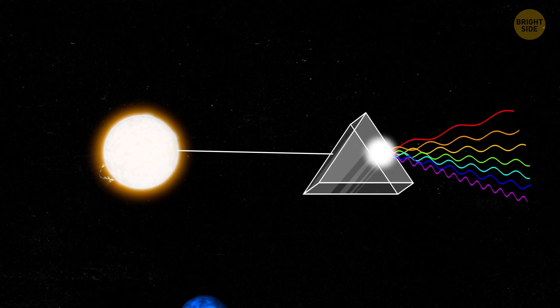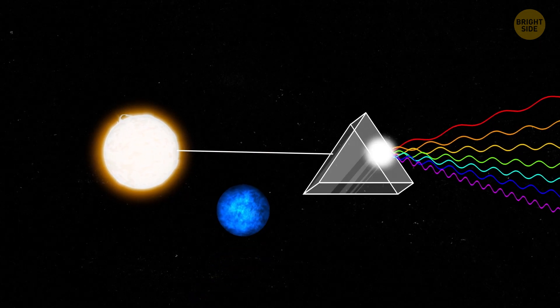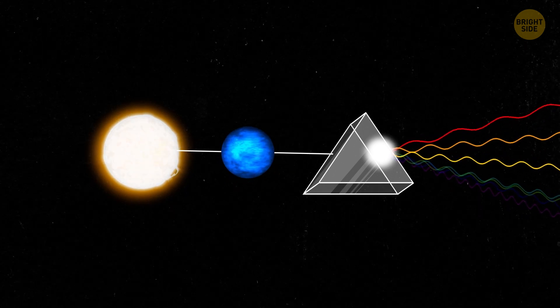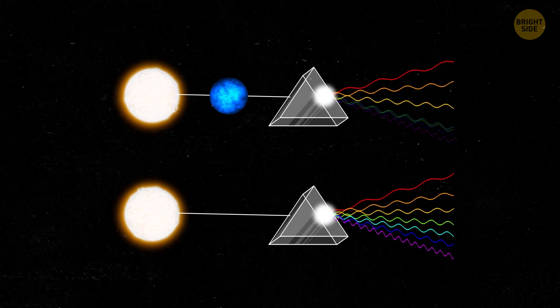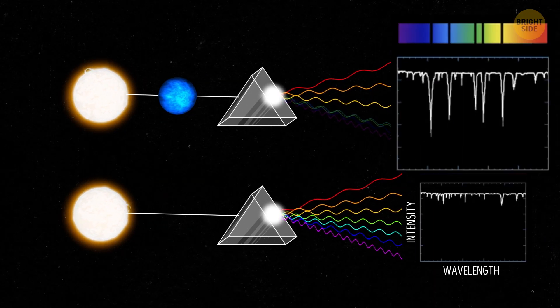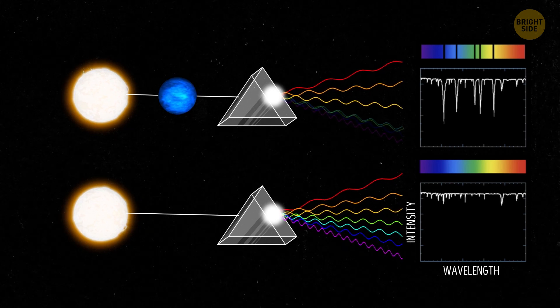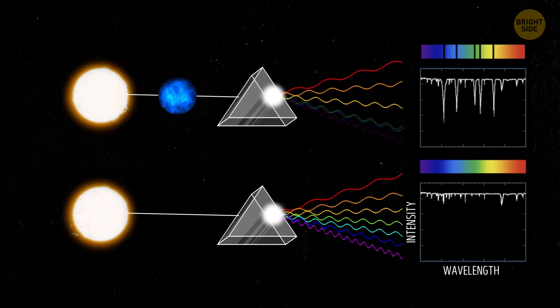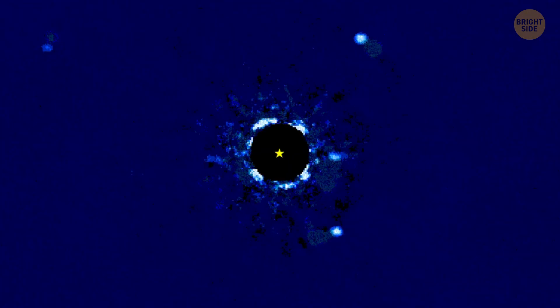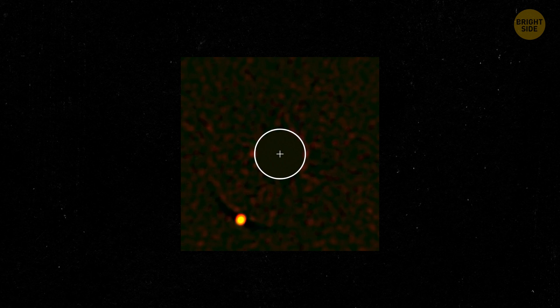When we see the star's light that has traveled through the planet's atmosphere, it gives us clues about what's in the air and how it's different from just the star's light alone. So, by studying these changes in light, we can figure out what kinds of elements and molecules are present in the atmosphere of a faraway planet. It's like a cosmic chemistry experiment, and it helps us learn more about whether there might be life out there.